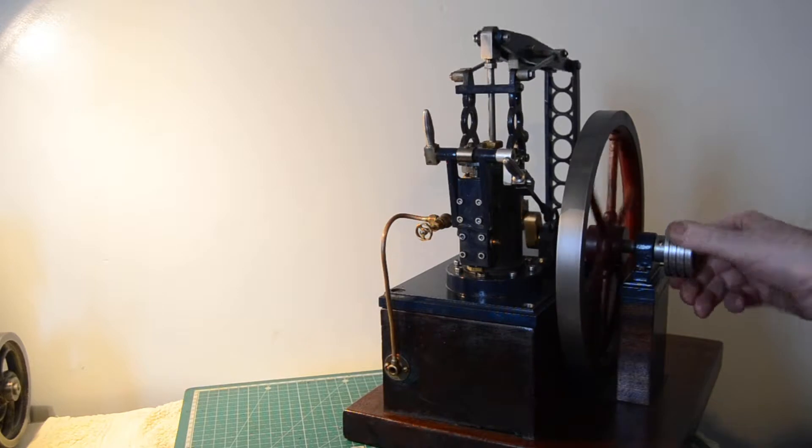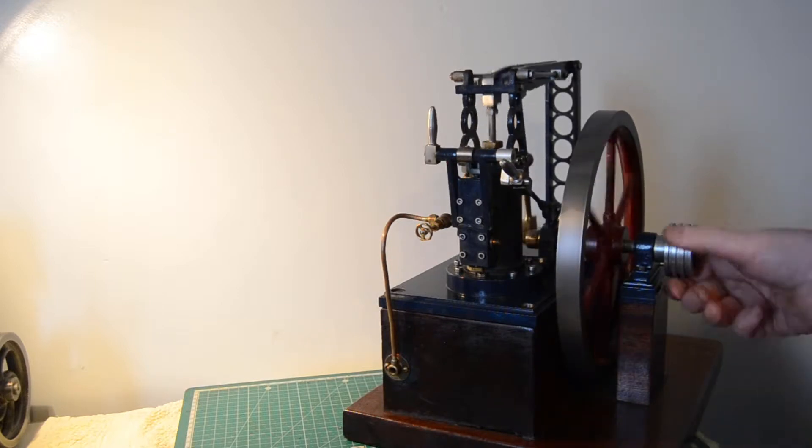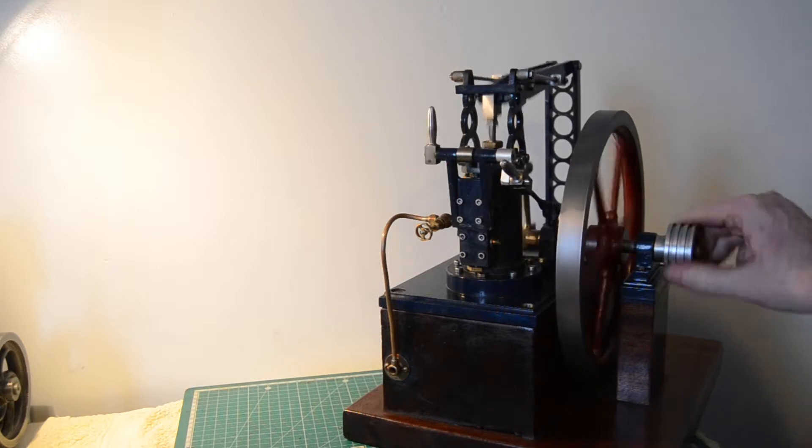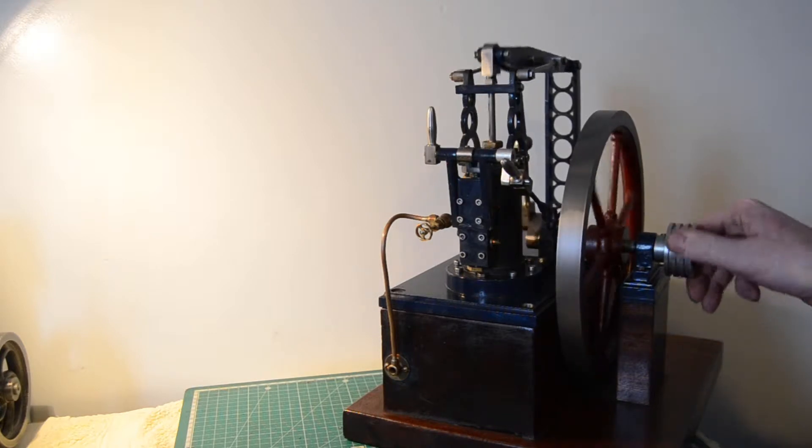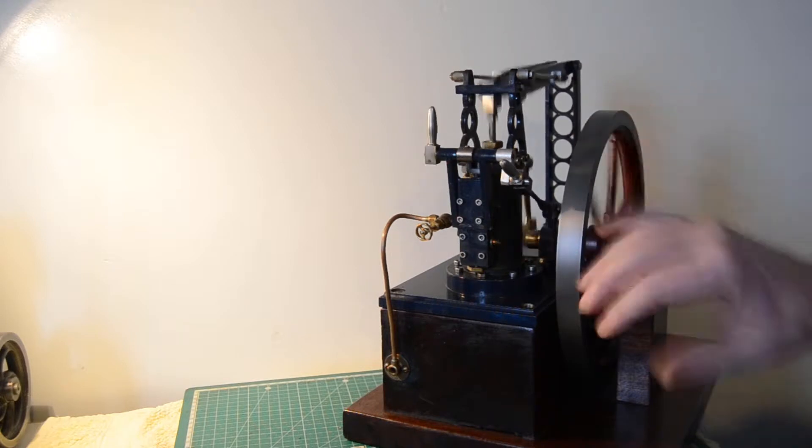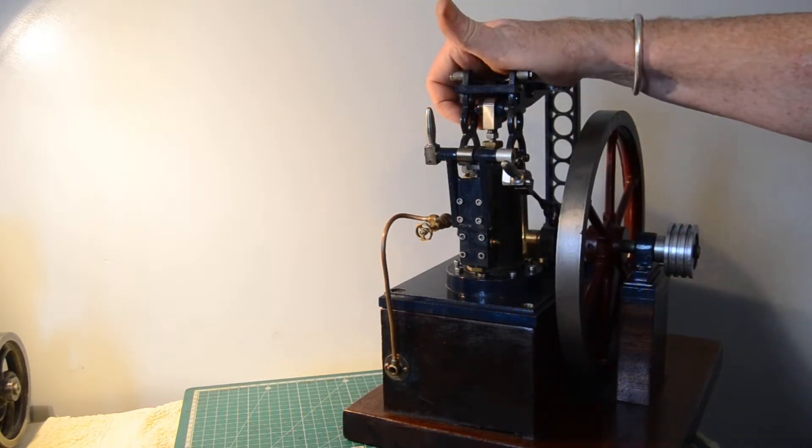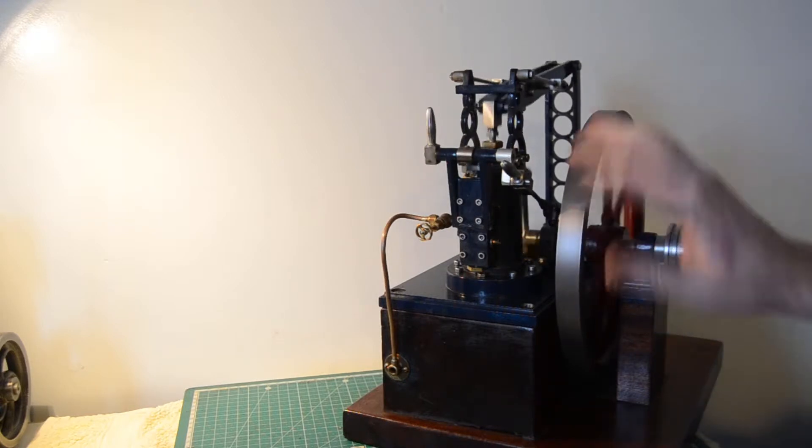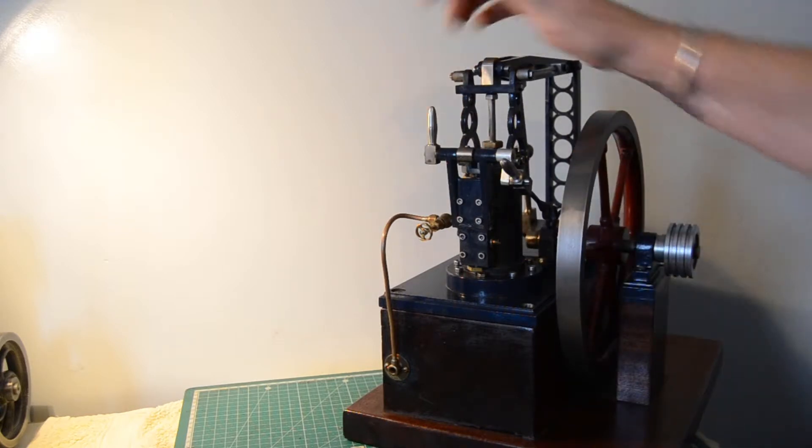It's not as common on steam engines - the D valve is more common for reasons I don't know, because it does work quite well. There are videos on YouTube of this engine running fine. The spool valve does get used a lot on steam locos, perhaps because of space limitations, but they're not so common on stationary engines.